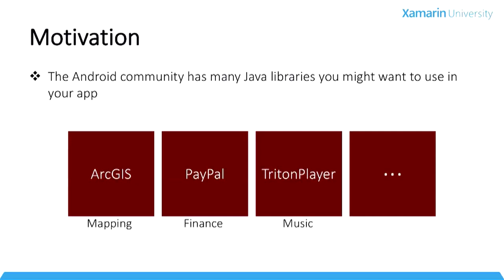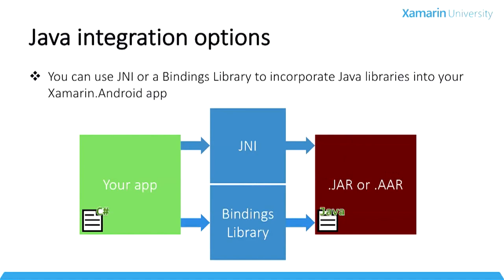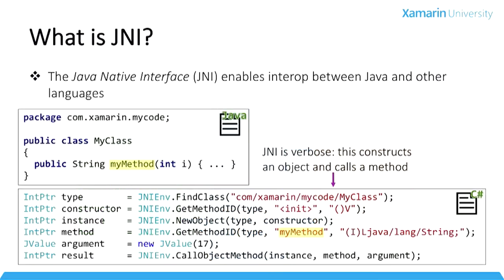The goal here is to let you call those services from C# code in your Xamarin Android app. There are two ways you can do this: you could use the Java Native Interface (JNI), or you could build a bindings library. JNI is a little quicker to get up and running because you don't have to do the initial step of building the library, but the code is a little more tedious to write. If you're doing a lot of work with your jar or AAR file, spending some time up front to create a bindings library is probably worthwhile.